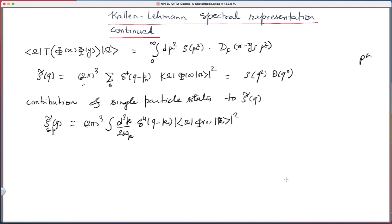Now what I will do is I will utilize the following result. Let me, so recall that we had shown d cube k over 2 pi cube, 1 over 2 omega k, this we did in the previous course, the first course, is same as d 4 k over 2 pi to the 4 times 2 pi delta plus k square minus m physical square. This is what we had done.